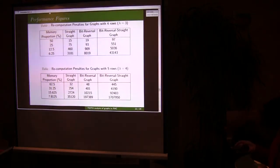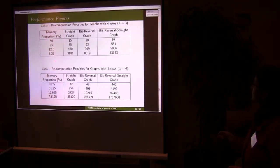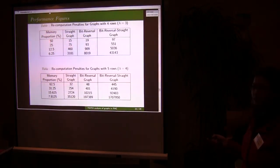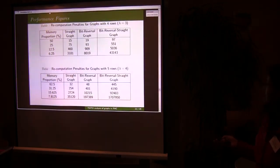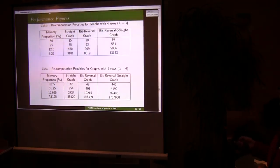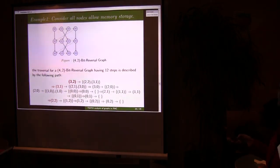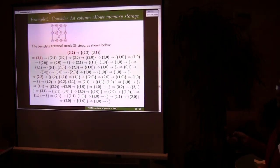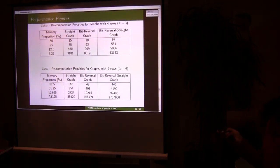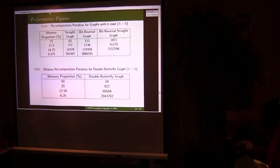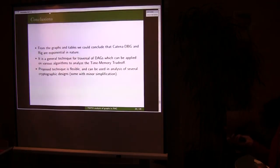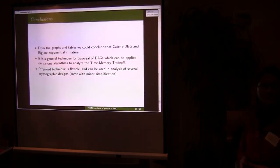Like this we calculated for all the graphs that I have already shown you - we calculated the recomputation penalties. This is showing that suppose you need 100% memory but you have reduced it to 50% or 25% or 12.5%. Then for each graph how much the penalties are. Through this table we are showing these things. Lambda equal to 4 means this number of rows. We are varying the number of rows and we have shown these results. By this table we come to the conclusion that RIG and CATENA-EBG is exponential in action.